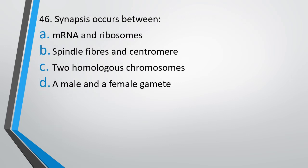Question No. 46. Synapsis occurs between: mRNA and ribosomes, spindle fiber and centromere, two homologous chromosomes, or a male and a female gamete. The correct answer is option C, two homologous chromosomes.